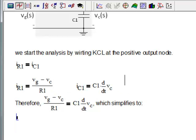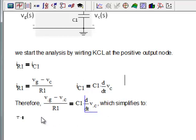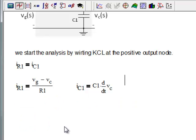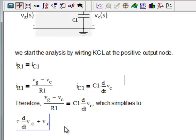And then I want to do the derivative of the capacitor voltage. So T, control, change, plus VC is control equal to VG.